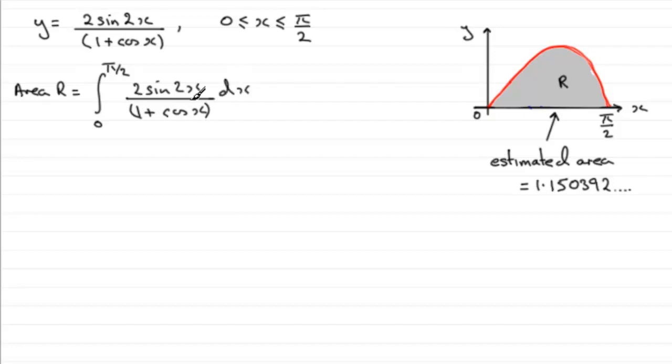The thing is in the previous part we found out what this integral was. We found out that this was equal to 4 times the natural log of (1 + cosx) and then minus 4cosx plus a constant of integration, but we can drop that now because we've got limits. So put those limits in going from 0 to π/2.